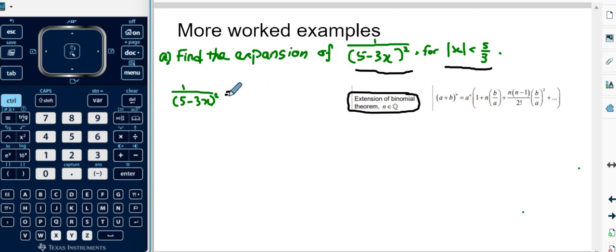First thing to do is to rewrite the expression, the fraction here as 5 minus 3x to the power of negative 2 using a negative exponent. Now this is in the form of a plus b to the power of n. We can see that a is 5, b is negative 3x, and n is equal to negative 2.